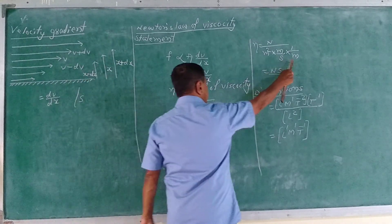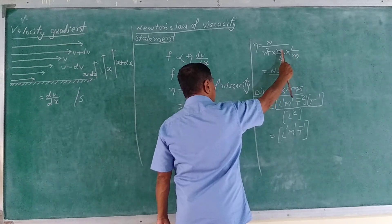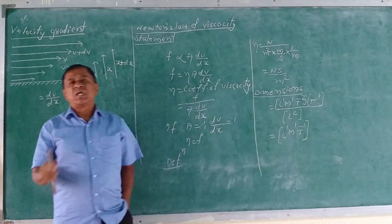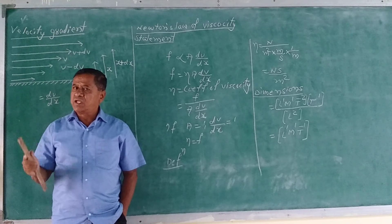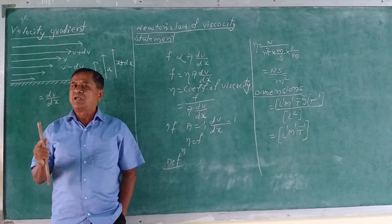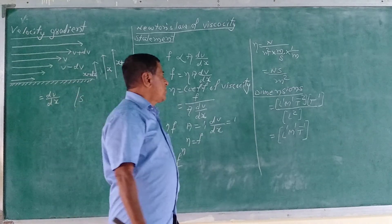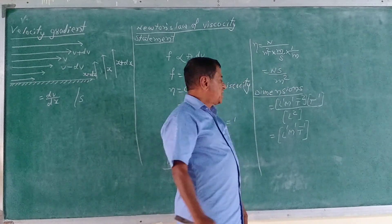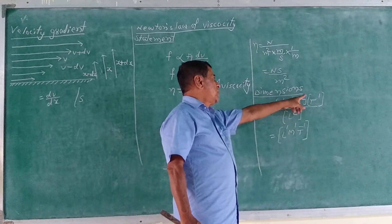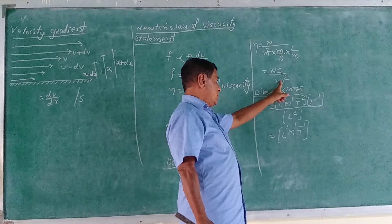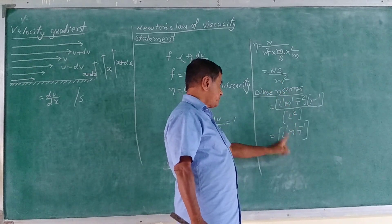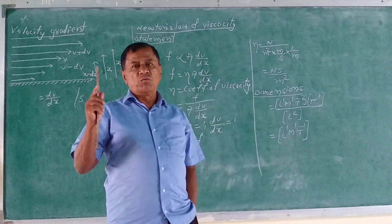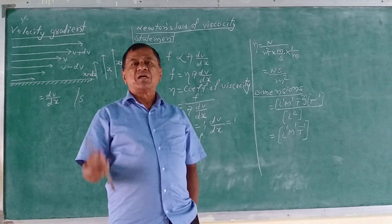The SI unit of the coefficient of viscosity is Ns per meter square. The dimensions are M¹L⁻¹T⁻¹.